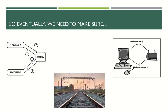Here's a simple example: process one and process two both want to use the display at the same time. Process one says 'I love India' and process two says 'I love India very much.' These two processes cannot use the display simultaneously. So we ask process one to raise interest first — if the display is available, it's allocated, process one uses it, releases it, then process two gets its turn.